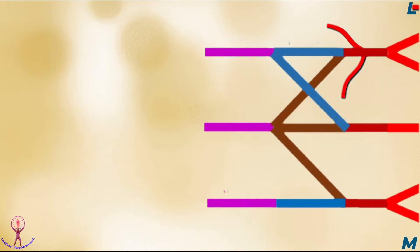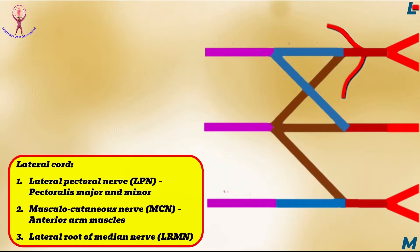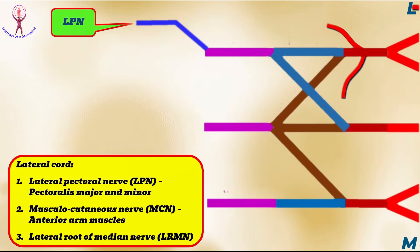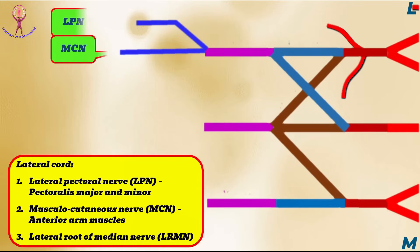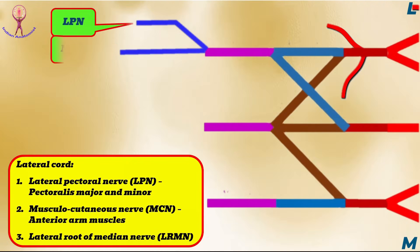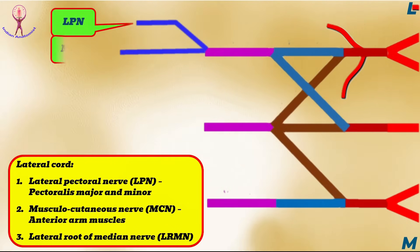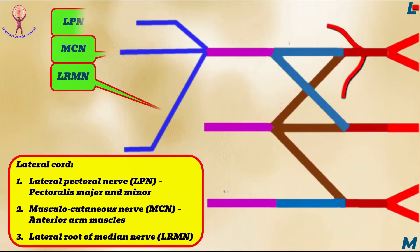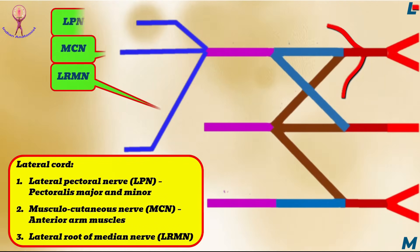Branches from cords — first, the lateral cord of the brachial plexus gives 3 branches, from lateral to medial: first, the lateral pectoral nerve, which supplies both pectoralis minor and pectoralis major muscles; second, the musculocutaneous nerve, which supplies the anterior compartment of arm muscles — coracobrachialis, biceps brachii, and brachialis — and then continues as the lateral cutaneous nerve of the forearm; and third, the lateral root of the median nerve, which joins the medial root of the median nerve from the medial cord to form the median nerve proper.